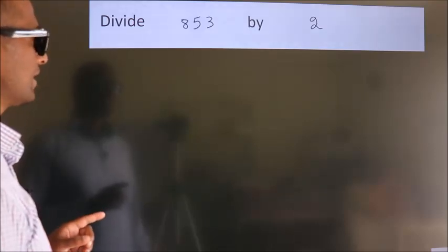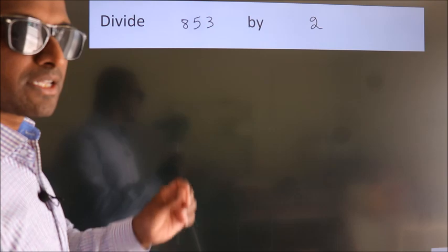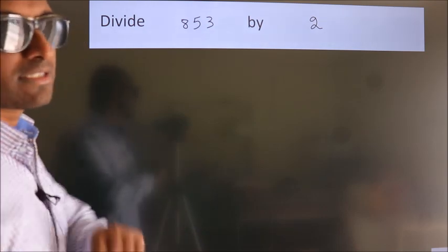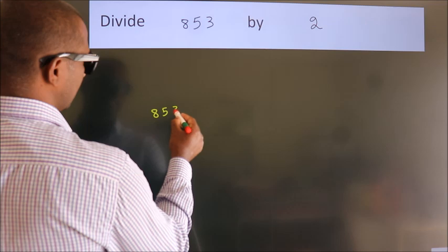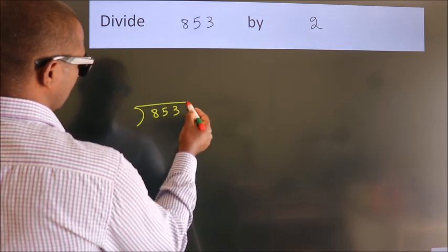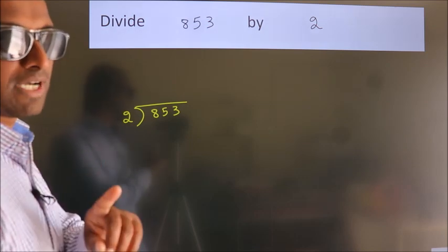Divide 853 by 2. To do this division, we should frame it in this way. 853 here, 2 here. This is your step 1.